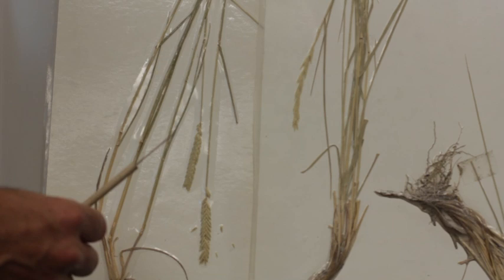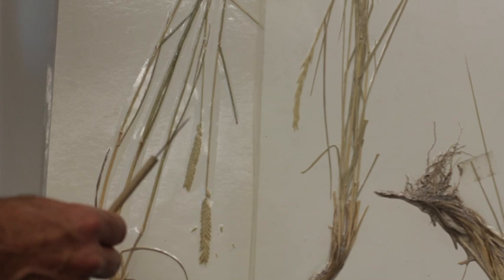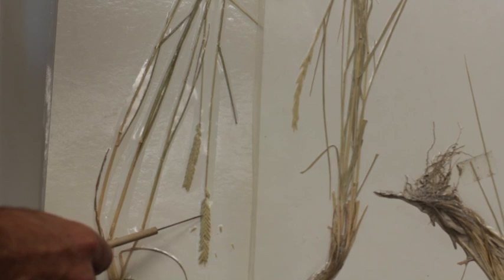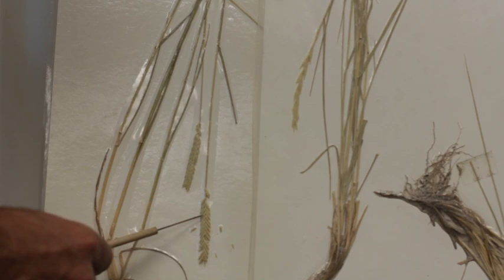So here we have three grasses that have spike inflorescence. Two of them are wheat grasses and one of them is Canada wild rye. Let's start with crested wheat grass. The best distinguishing feature on crested wheat grass is the spike inflorescence with very strong V's. Or students say they look like a fish skeleton.